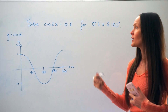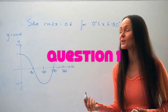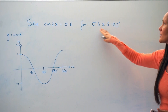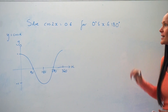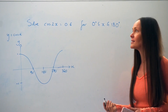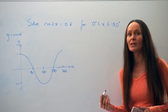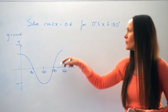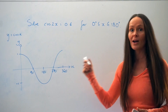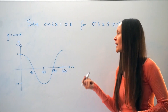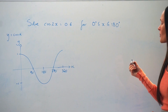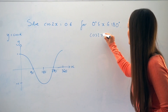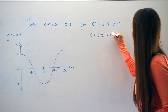The question is: solve cos2x = 0.6 for a range of x values between 0 and 180 degrees. Because in this question we're using cosX, I've done a quick sketch of a section of the graph y = cosX, which will help us later on. So to start with, I'm going to write down the equation again: cos2x = 0.6.